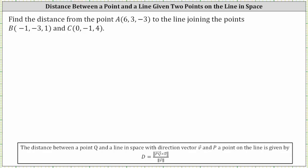We're asked to find the distance from the point A to the line joining points B and C. Looking at the notes below, the distance between a point Q not on the line and a line in space with direction vector V and point P, a point on the line, is given by D equals the magnitude of vector PQ cross with vector V, divided by the magnitude of vector V.